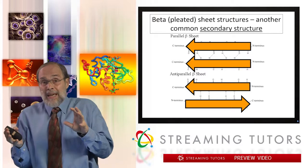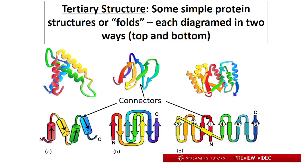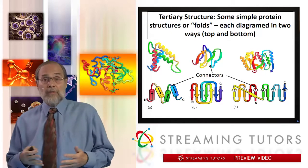Let's now look at how secondary structural elements get put together into tertiary structure. Here are three tertiary structures worth taking a few minutes to look at. Let's start with the leftmost one. Each of these is a pair — at top you see a ribbon diagram of a protein that has lots of alpha helices in it. You'll notice the helical segments connected with non-standard loops, sometimes called connectors. At the bottom there's a simplified version of the diagram that makes it easier to see the flow of the peptide from its amino terminus to its carboxy terminus through the protein.